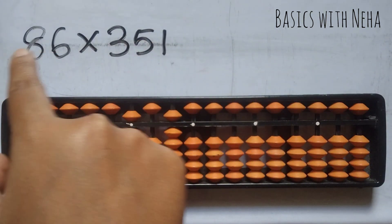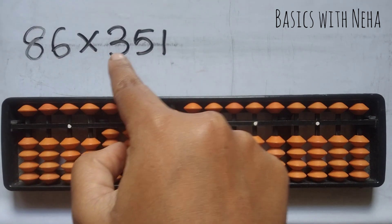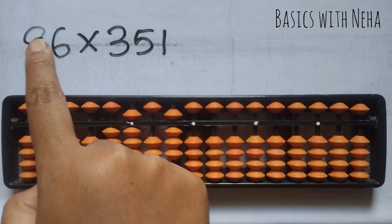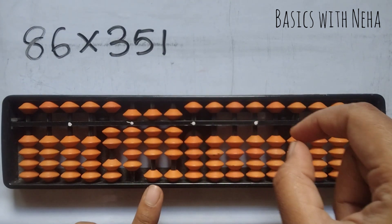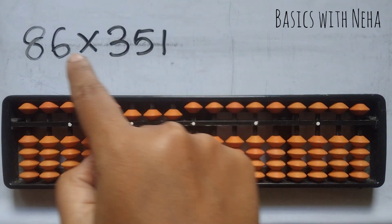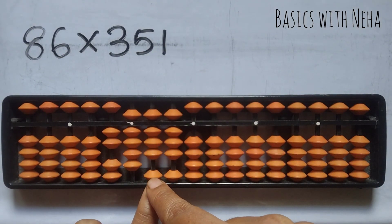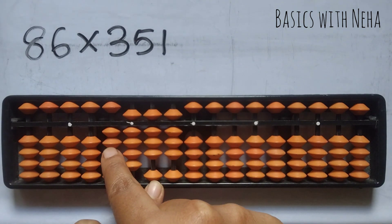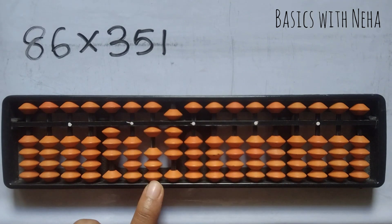Now we are done with 8 into 351. Now do 6 into 351, which is 4 numbers, start from the thousands place. 6 threes are 18 — 1, 8. 6 fives are 30. So to place 3 here, it is plus 10 minus 7. Plus 10, we cannot do it here, so jump this rod and do plus 10 minus 7. Remove everything from the jumped rod.